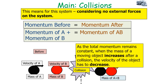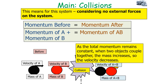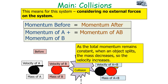As the total momentum remains constant, when the mass of the moving object increases after a collision its velocity has to decrease, and vice versa. If the mass decreases after a collision, the velocity has to increase. When two objects couple together in a collision the mass increases, so the velocity decreases; if an object splits in a collision the mass decreases, so the velocity increases.